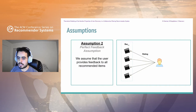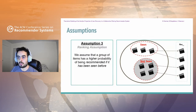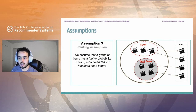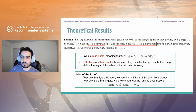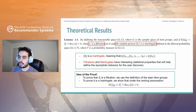To be more realistic, we will later empirically challenge this assumption by making the user only rate a few items depending on their ranks. Finally, we assume that a group of items has a higher probability of being recommended if it has been seen before — this is the ranking assumption, which assumes a pure exploitation strategy. But we will later empirically show that even if this assumption is violated, our bounds still hold. Our first result is Lemma 3.5, where we show that S_t can be considered as a filtration and the random process defined by the cardinality of S_t is a martingale. Filtrations and martingales have very interesting statistical properties that help define the asymptotic behavior for user discovery.